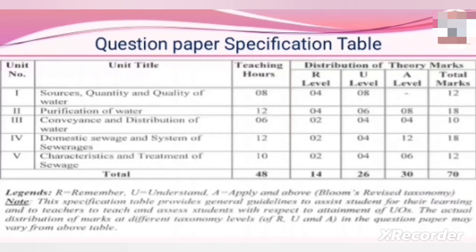Question Paper Specification Table. The table represents various marks carried by each unit. First unit carries 12 marks, out of which 4 marks are of R level (Remember level) and 8 marks are of U level (Understanding level), with no application level marks for Unit 1. Similarly, Unit 2 carries 18 marks, Unit 3 carries 10 marks, Unit 4 carries 18 marks, and Unit 5 carries 12 marks. In this way, the question paper will be of 70 marks for the theory examination.